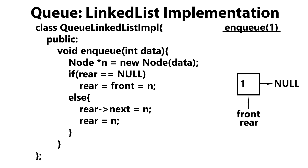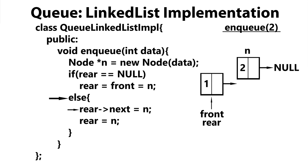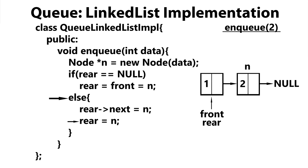Now let's give another example. Let's say I want to enqueue two onto our queue. First, we're going to create a new node based on the data being passed in. Then we check: is rear equal to null? The answer is no, so we move down to the else statement. First, we make rear's next pointer point to the newly created node, and then we advance rear to point to n, since n is now the last node within our queue.